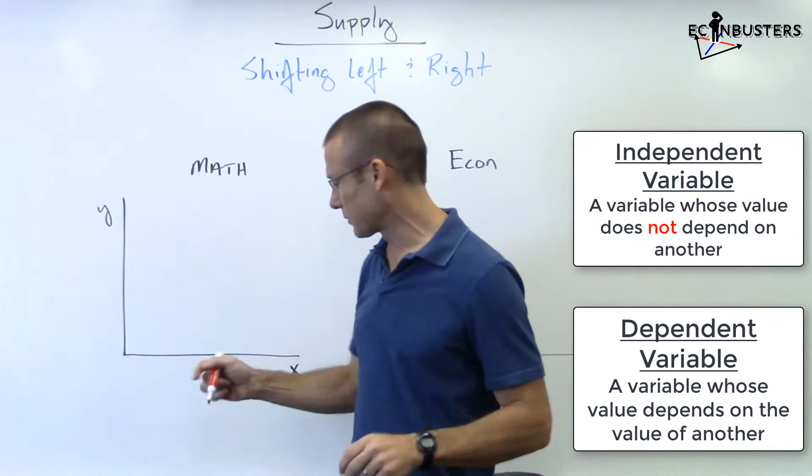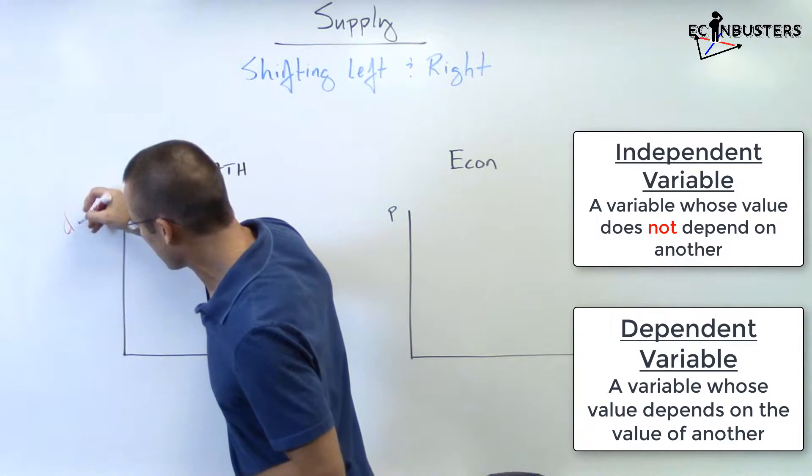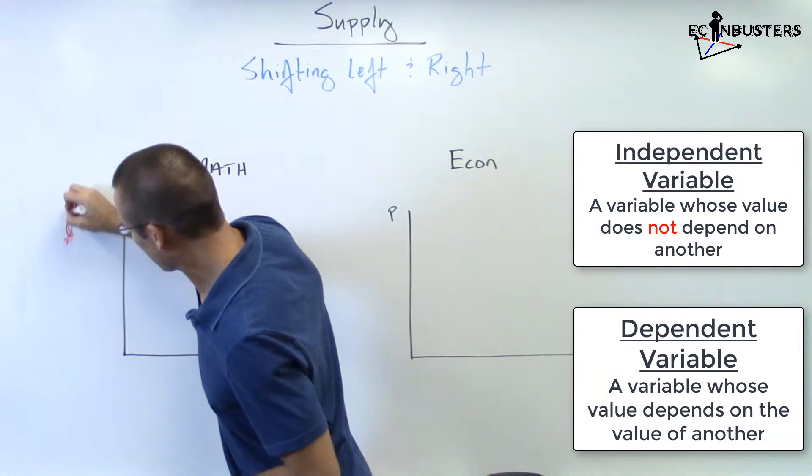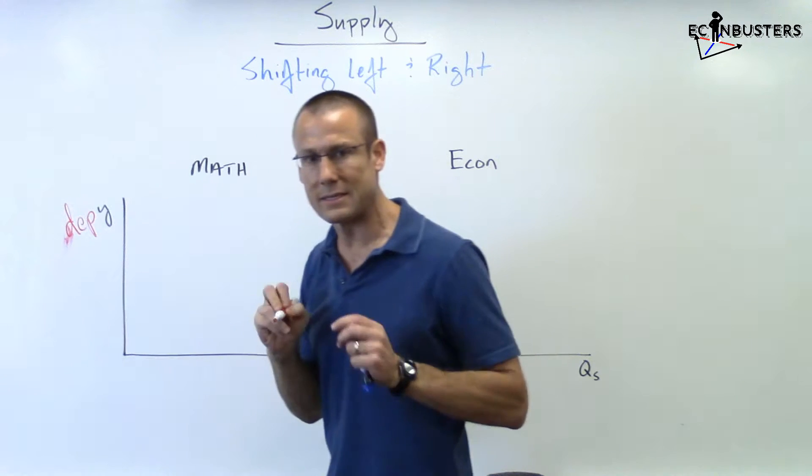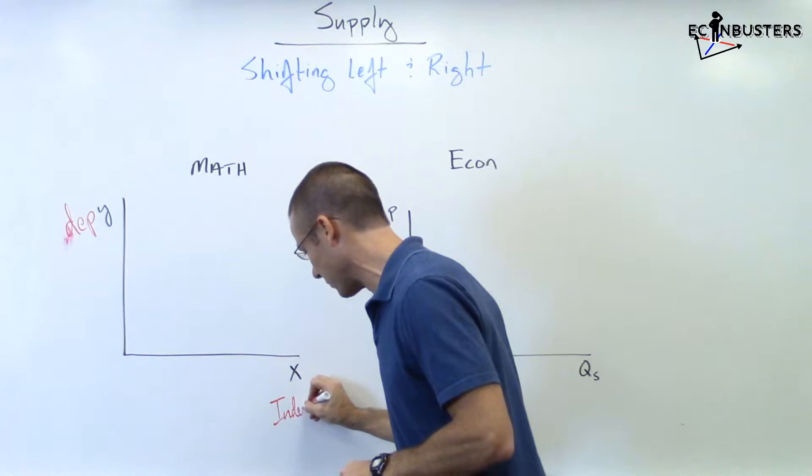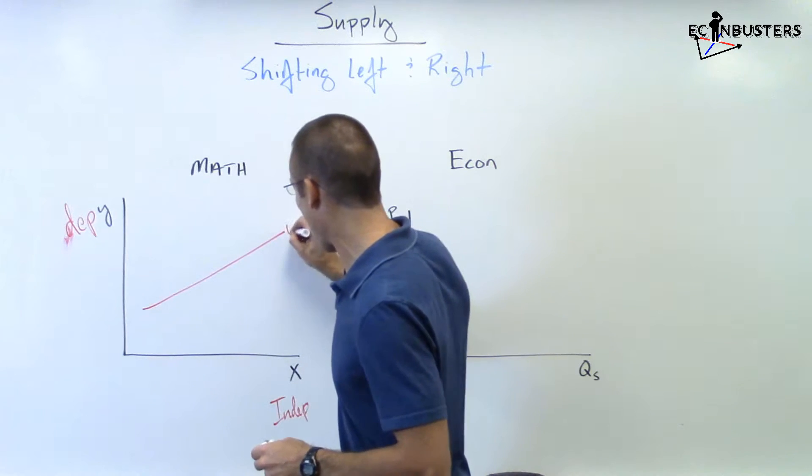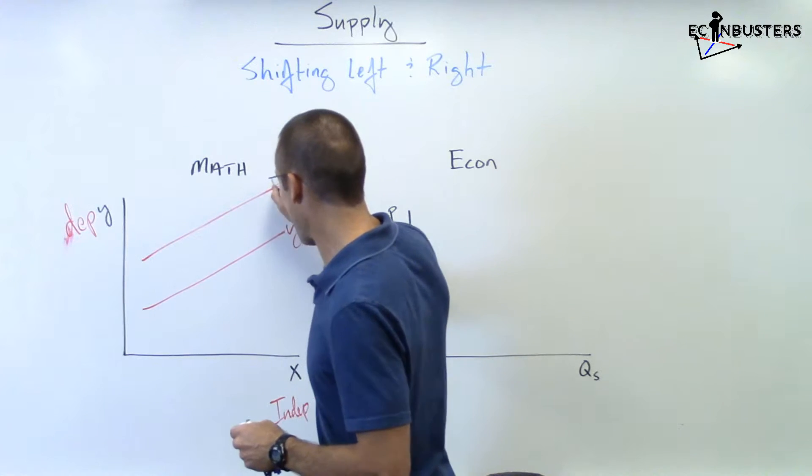And the y is the dependent variable. Actually let me make sure that comes out a little bit clearer - the y is the dependent variable and the x is the independent variable. So if you see, let's say, the following functions: a y sub zero and a y sub one